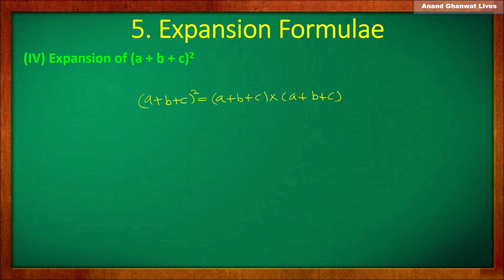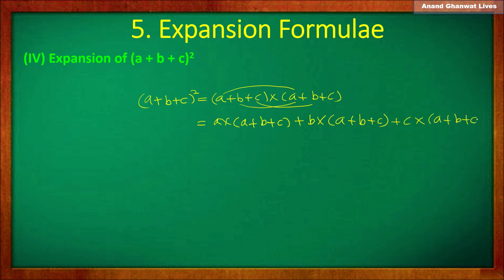While multiplying a trinomial by a trinomial, we have to multiply each term in the first trinomial to the second trinomial. So we multiply a plus b plus c with a, then with b, and also with c. This gives us three multiplications — each a monomial multiplied by a trinomial.